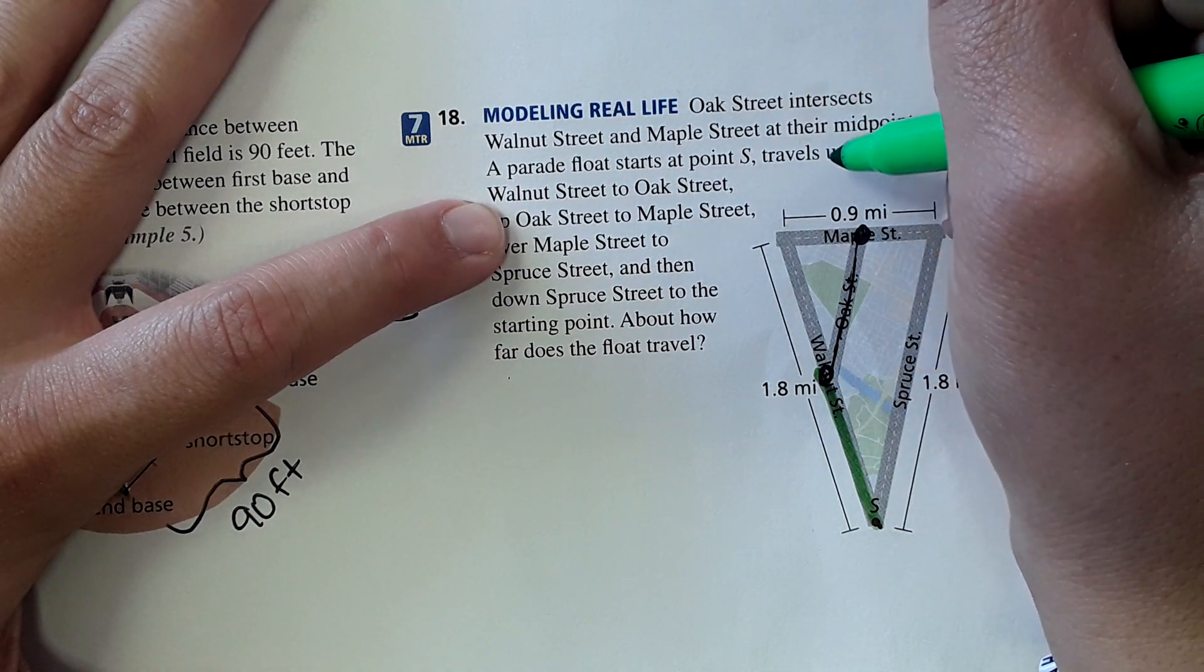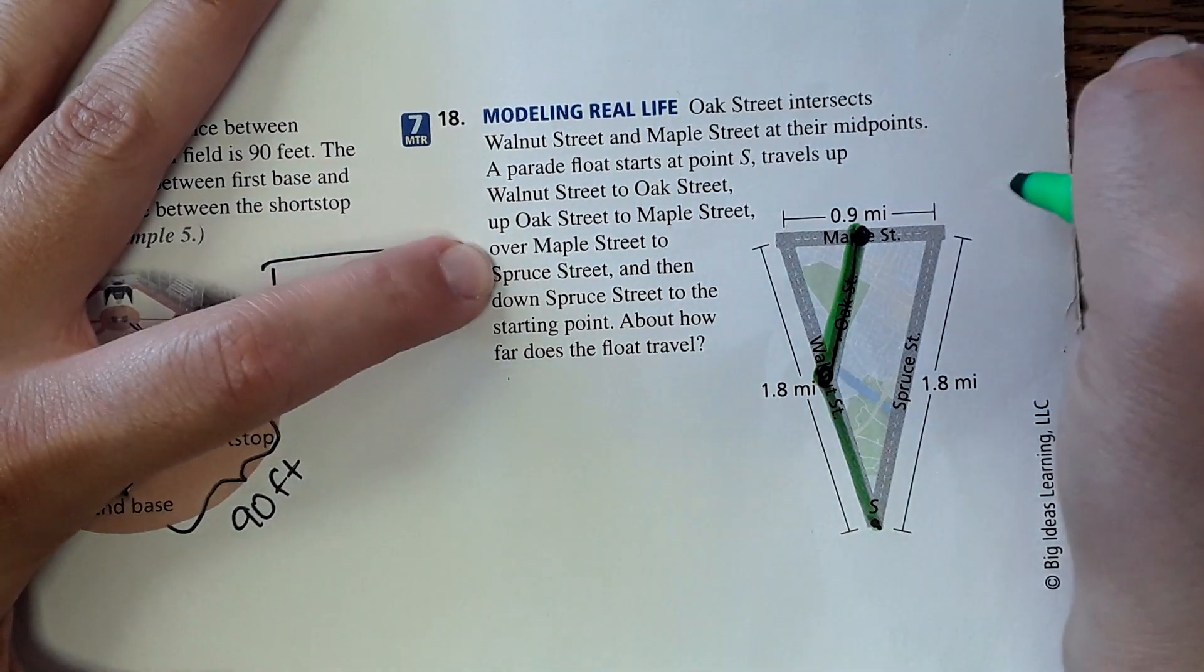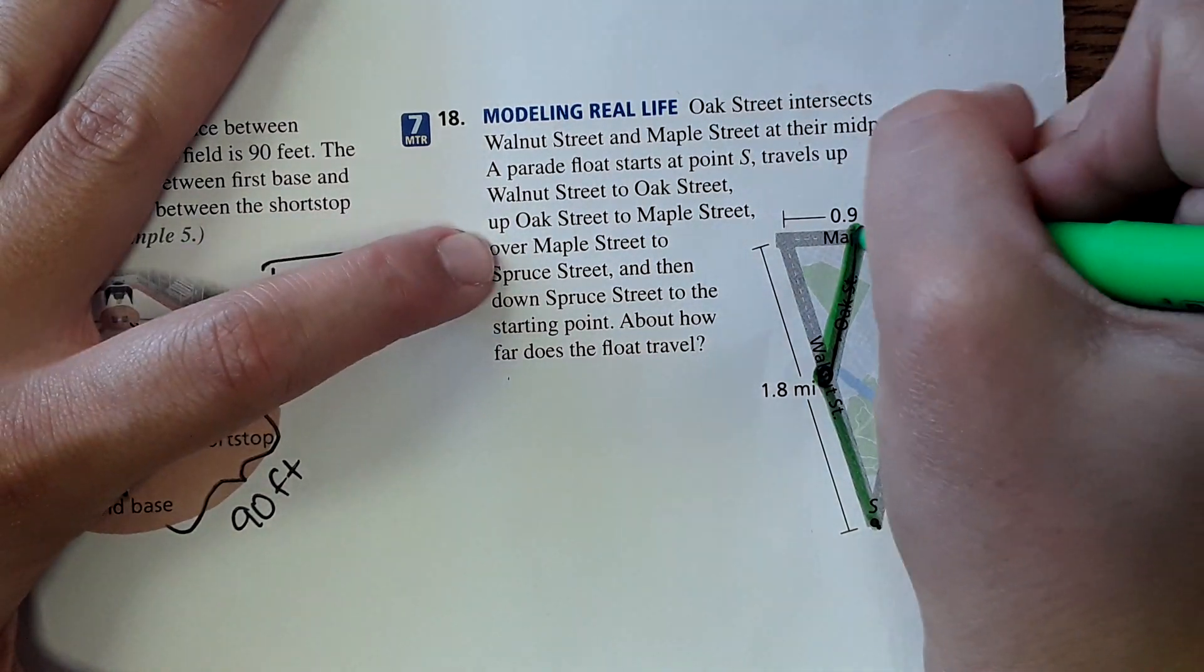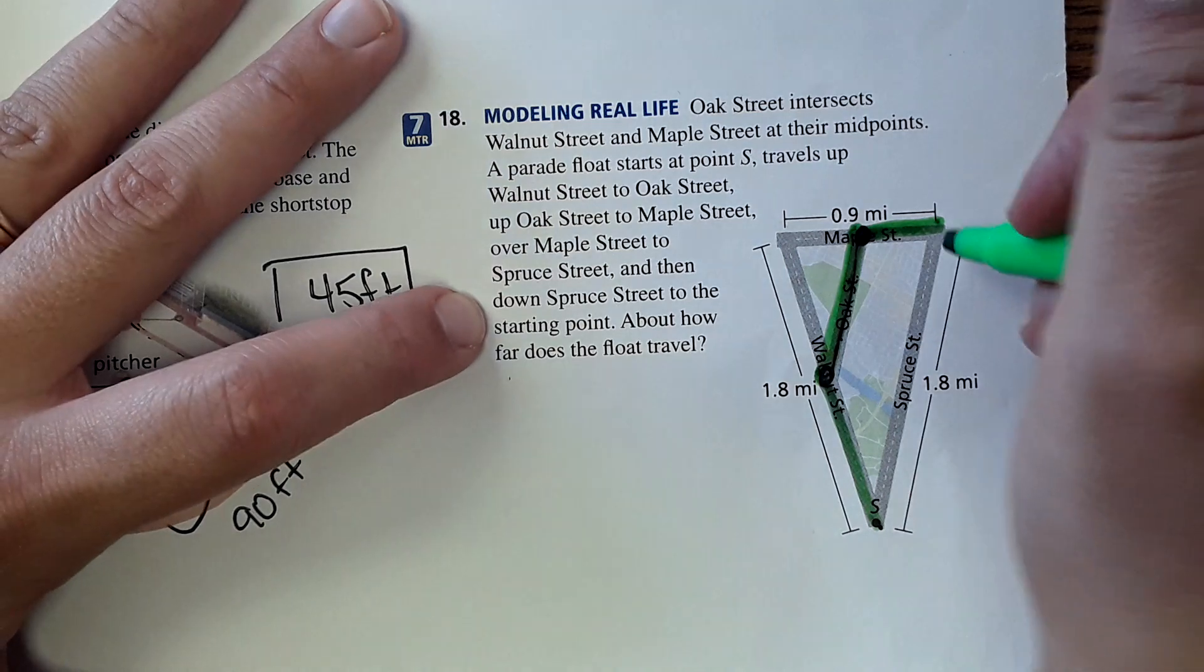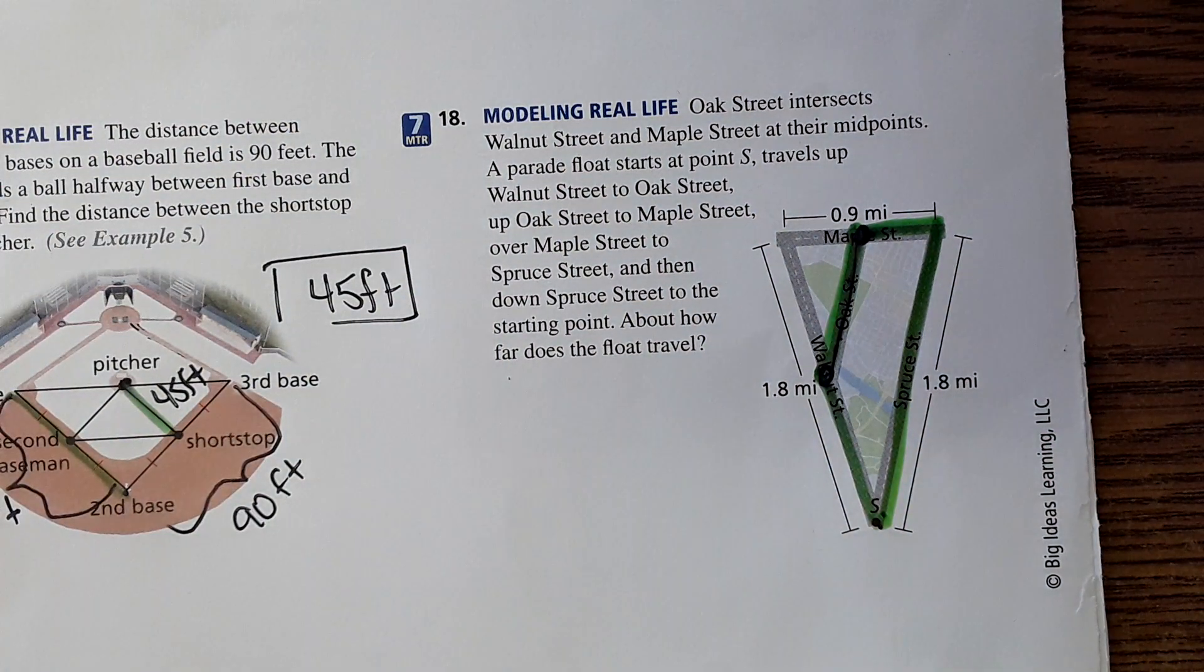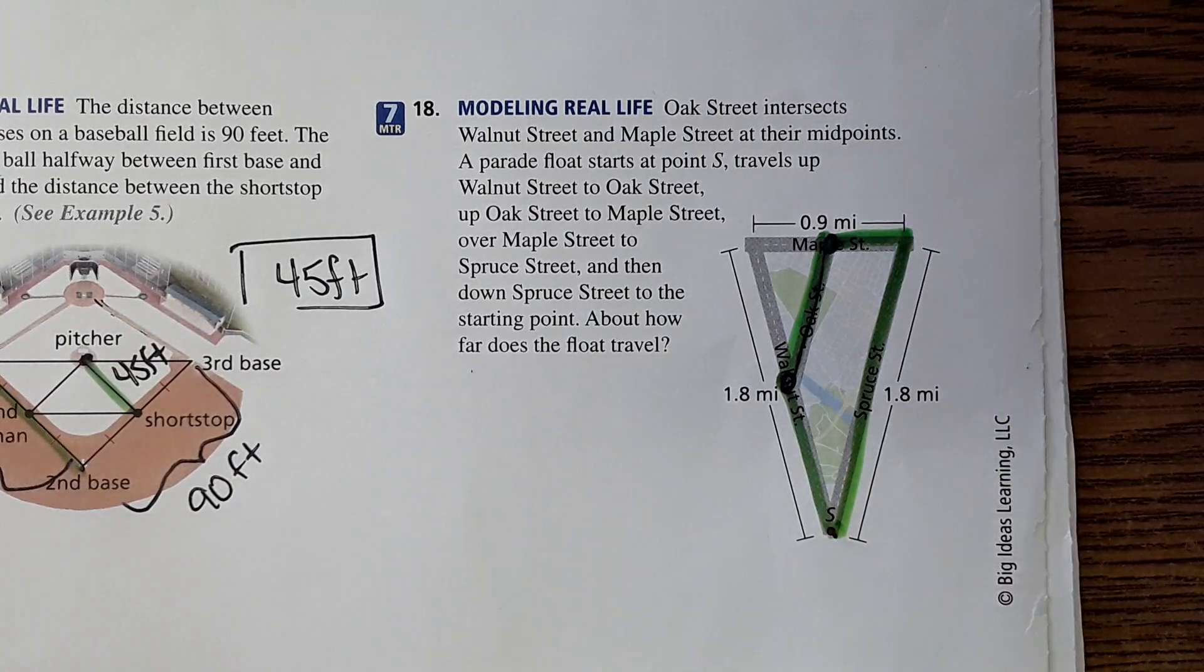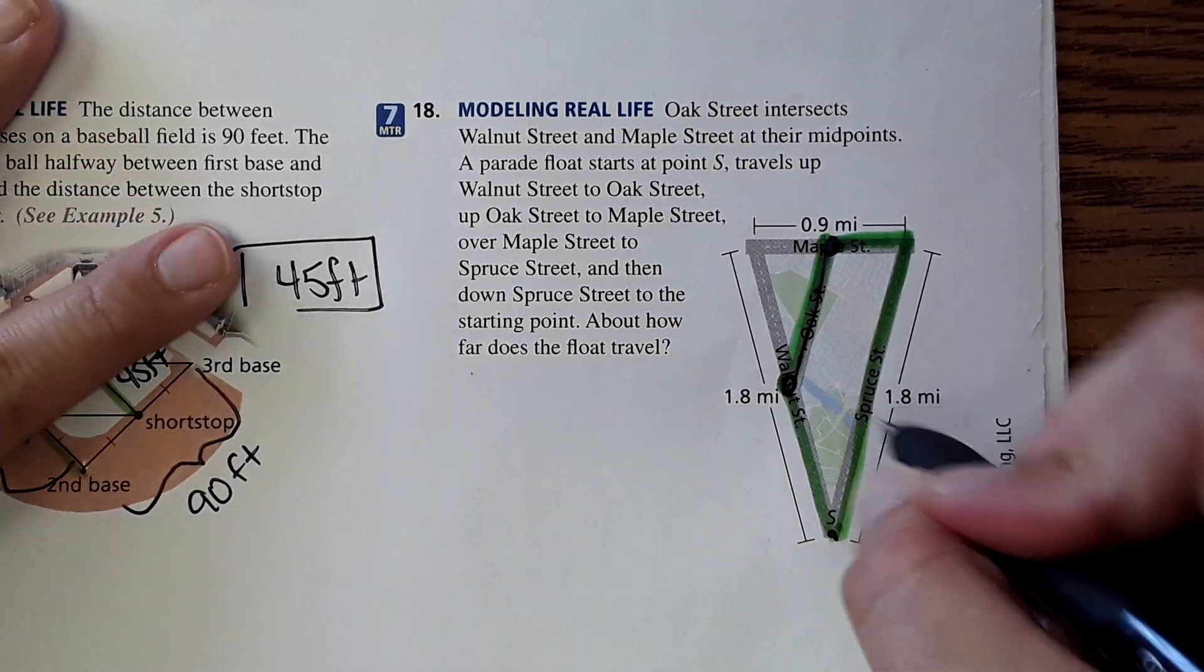Then travels up to Oak Street, up Oak Street to Maple Street, so it goes this way. Over Maple Street to Spruce Street, so then it goes here and then down Spruce Street. About how far does the float travel? Okay, so we have to find that distance there. Well this is labeled 1.8, so we got that.